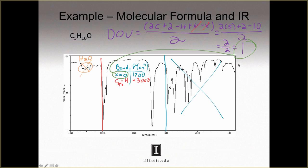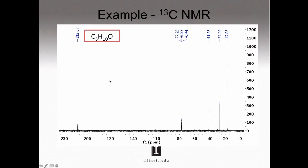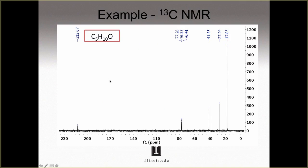So far we have calculated our degrees of unsaturation — a value of one — and recorded that in our tables. In the IR spectrum, we have filled a table containing the major stretches. Now let's move on to interpreting the carbon-13 NMR. Before we start, let us note that we have three peaks here at roughly 77 ppm, which corresponds to chloroform, the NMR solvent, and so it is not part of our molecule.